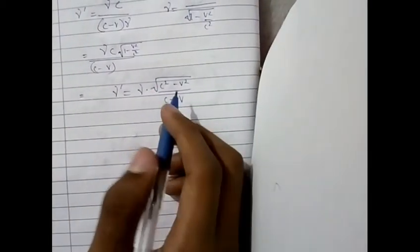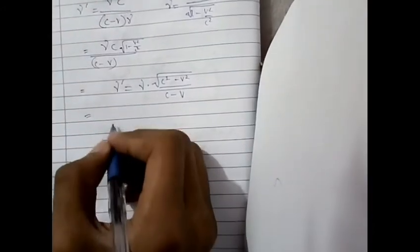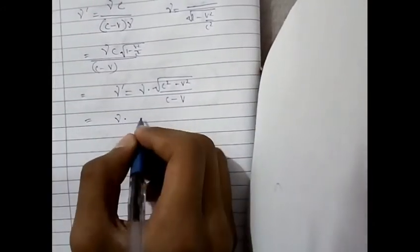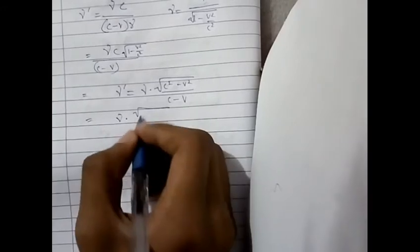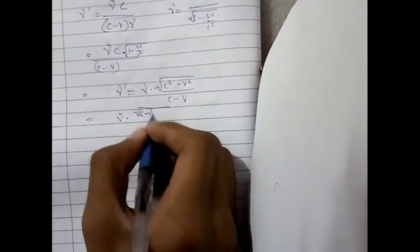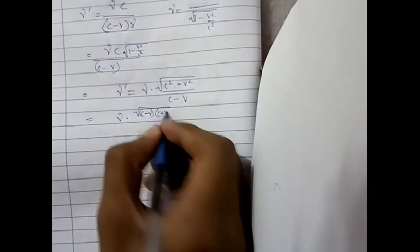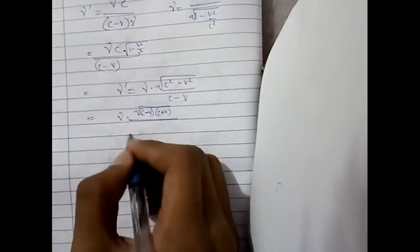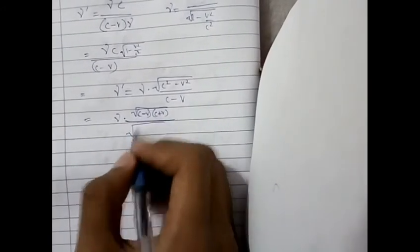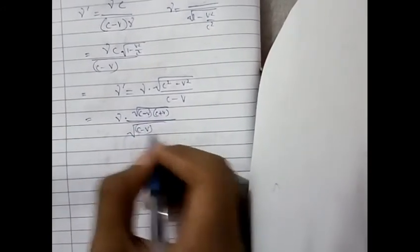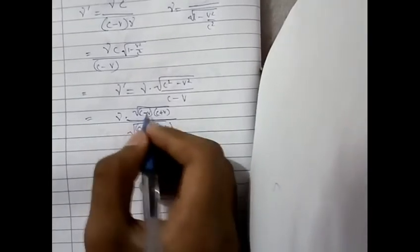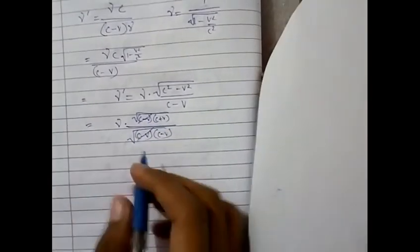We know that C square over C square minus V square is just nu times under root C minus V times C plus V and I have to divide it by under root C minus V times C minus V. And we have to cancel both the terms out.